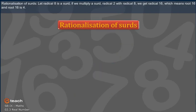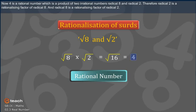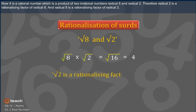Rationalization of Surds: let root 8 be a surd. If we multiply another surd, root 2, with root 8, we get root 16, which equals 4. Now, 4 is a rational number, which is the product of two irrational numbers, root 8 and root 2. Therefore, root 2 is a rationalizing factor of root 8, and root 8 is also a rationalizing factor of root 2.